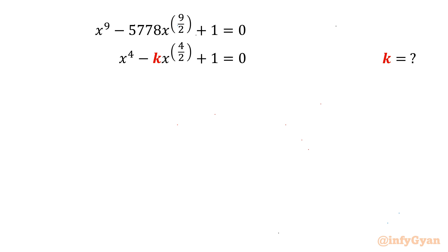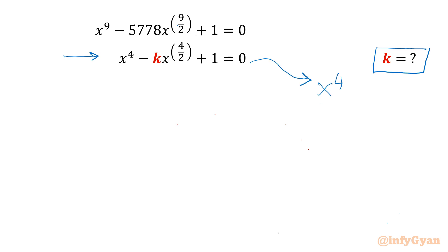Welcome back to Infigyan. In this exciting and challenging video on algebraic expressions and equations, the given equation is x^9 minus 5778 times x^(9/2) plus 1 equal to 0. We have to evaluate k from this equation. Beginning with the second equation: x^4 minus kx² plus 1 equal to 0.